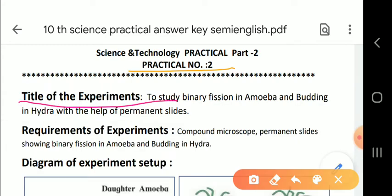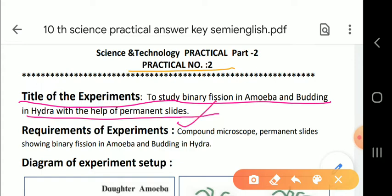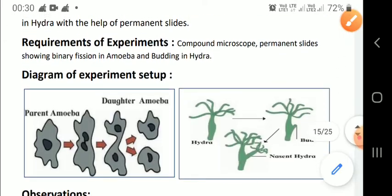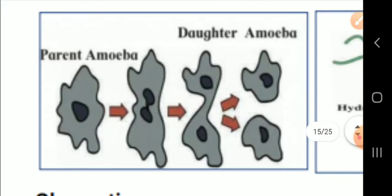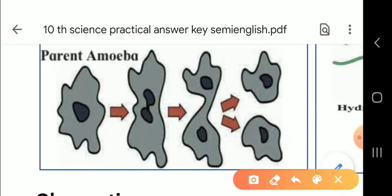The title of the experiment is: to study binary fission in amoeba and budding in hydra with the help of permanent slides. For requirements, we need a compound microscope and permanent slides showing amoeba. We will also study about budding in hydra. Here in the diagram you can see the parent amoeba and daughter amoeba. I'll explain about this, then we will proceed with the hydra.